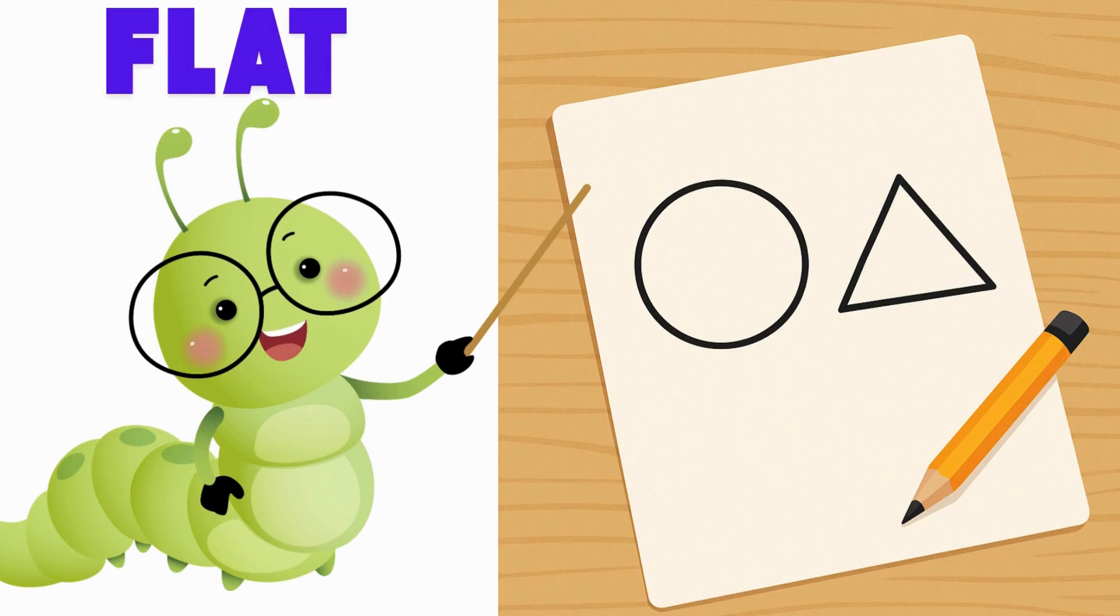A flat shape is one you can draw on paper. It is two-dimensional. This means it doesn't pop up, like a circle or a triangle. Say, flat. Trace a flat shape in the air with your finger.